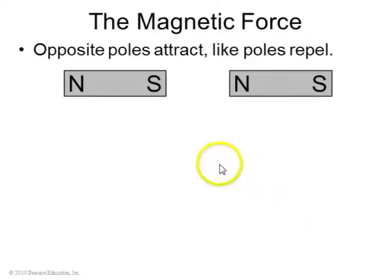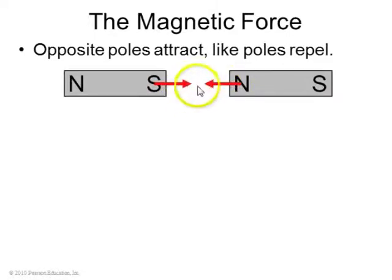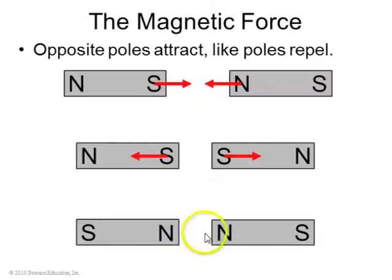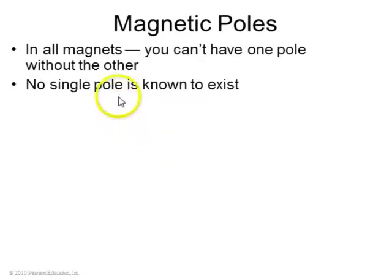If you've ever played with magnets, you know that sometimes they repel and sometimes they attract. The rule is: if you have the N pole facing the S pole of two different magnets, opposite poles attract, so they'll be pulled towards one another. If you have S facing S, you get a repulsive force. If you have N facing N, you get a repulsive force. Magnets always have two poles — there's no such thing as a single magnetic monopole.